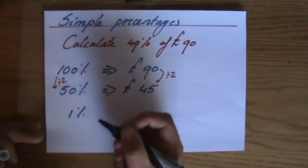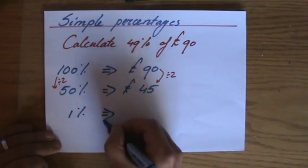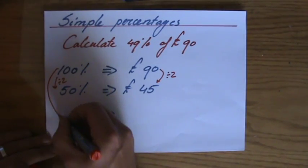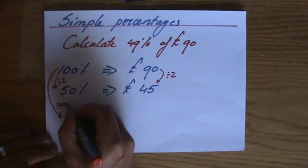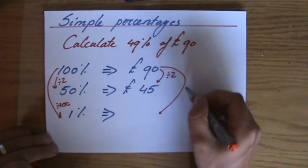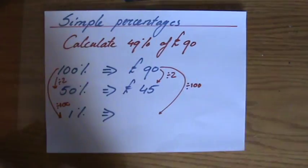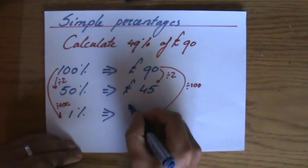Okay, so what is that 1%? What is 1% of 90 pounds? Well, from 100 to 1, divided by 100, so 90 divided by 100. Is 0.9.